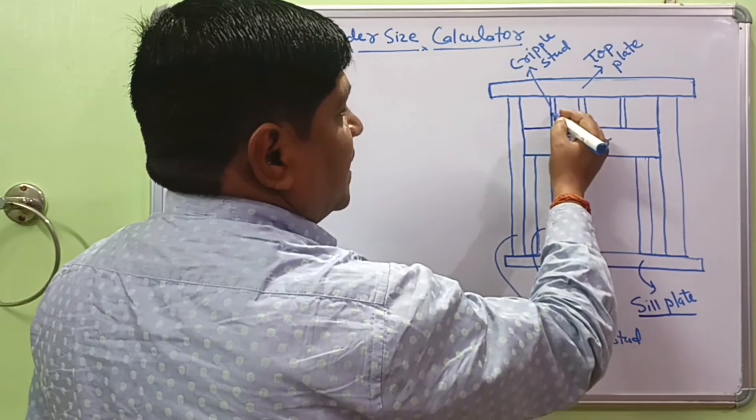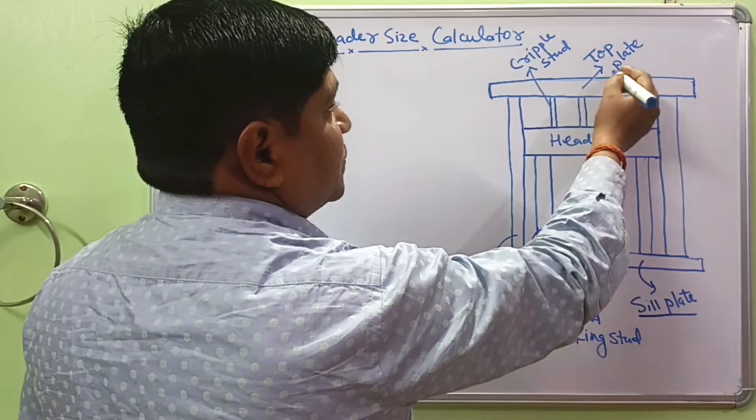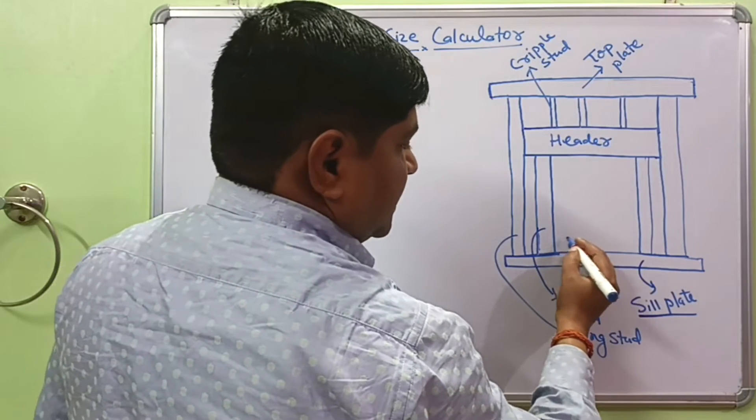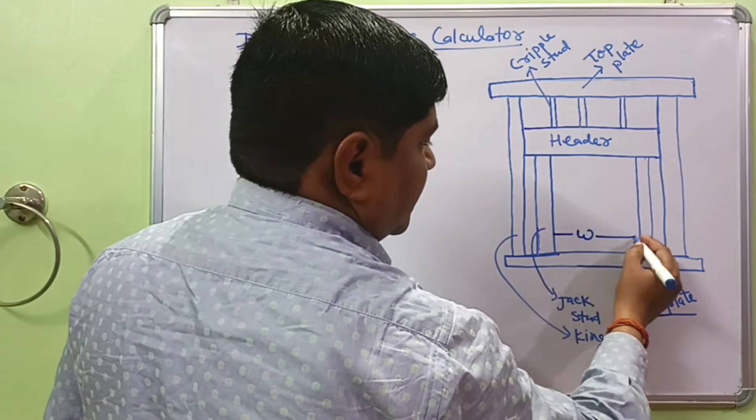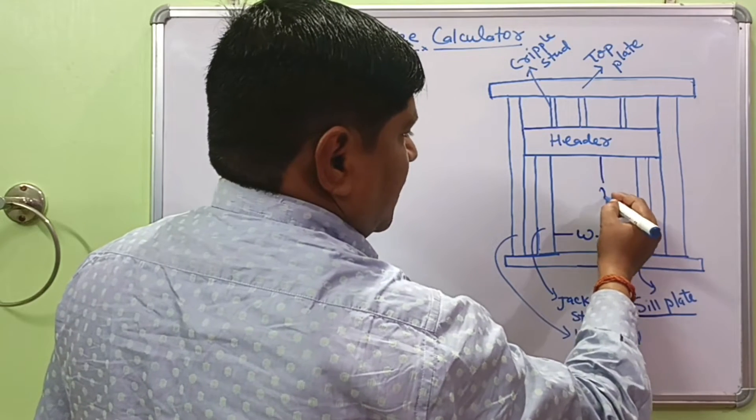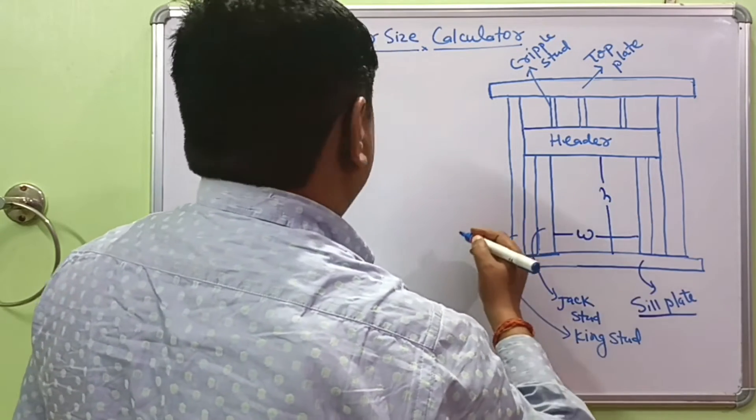This is header and this one is cripple stud and this one is top plate. And this is the opening, this is the width and this is the height of opening of door.